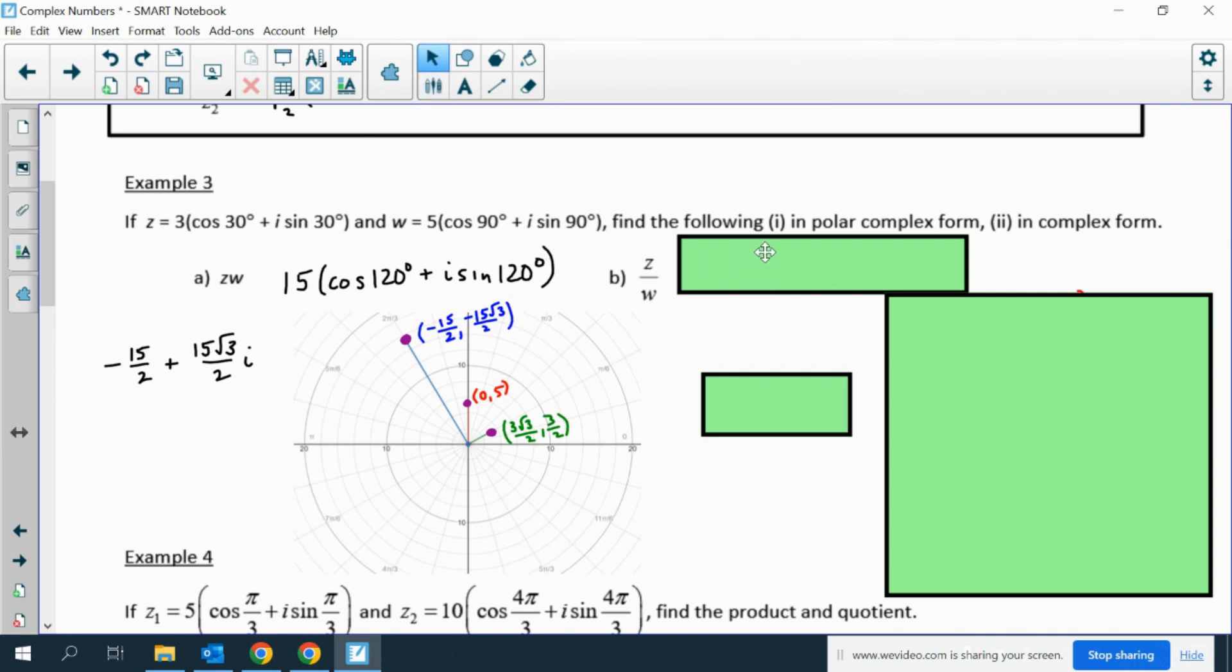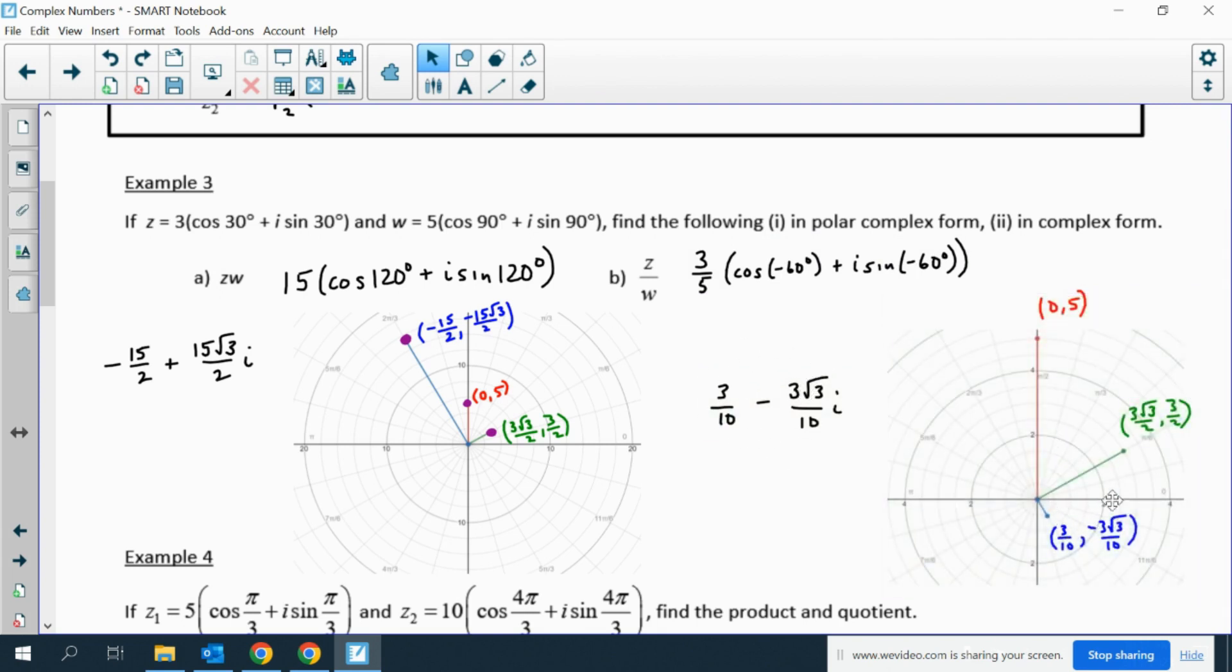Z divided by w is 3 fifths, and then you subtract the angle so you get negative 60 degrees, or you could write it as 300 degrees if you want. You can write it in its regular complex form. Here's another picture that shows you what it looks like. 30 minus 90 gets you negative 60. It makes sense that 3 divided by 5 gets you 3 fifths. Notice that 3 tenths comma negative 3 root 3 over 10, if you did the Pythagorean theorem on that, you would get a radius of 3 fifths.